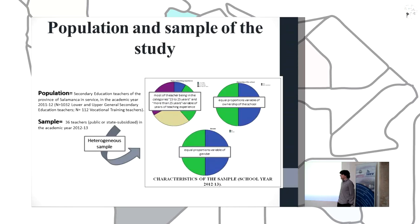The population of the study is composed by secondary education teachers of the province of Salamanca in service in the academic year 2011 and 2012. It is composed by 1,032 lower and upper grade general secondary education teachers and 112 vocational training teachers. The sample of the study is composed by 36 teachers both from public or state-subsidized schools in the academic year 2012 and 2013.